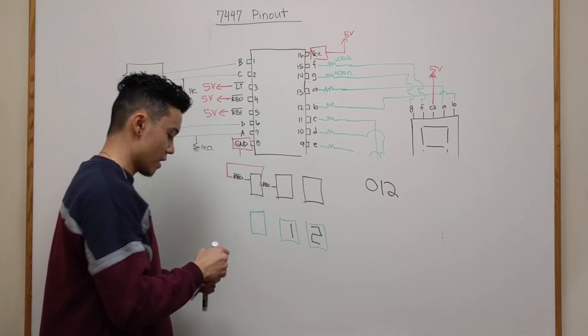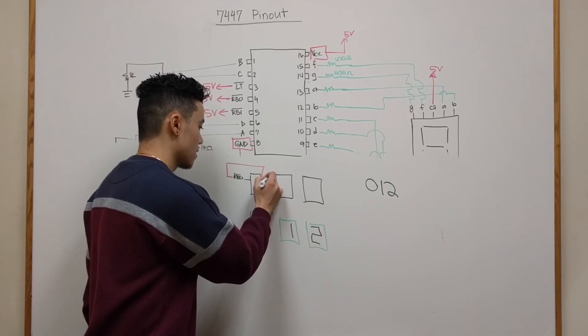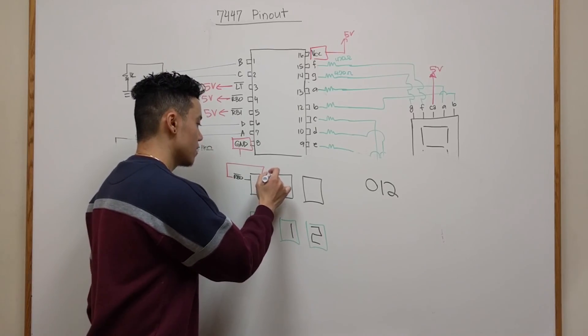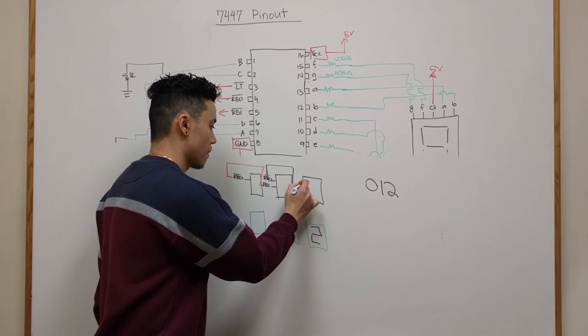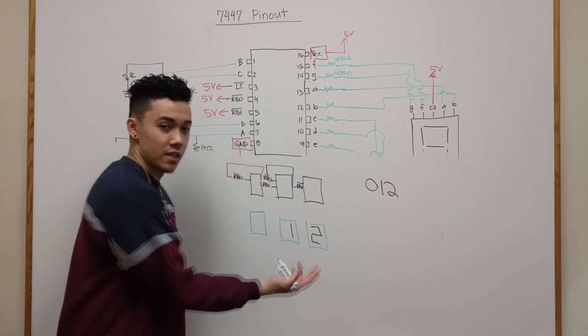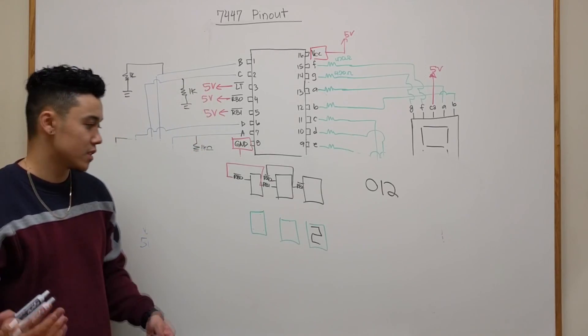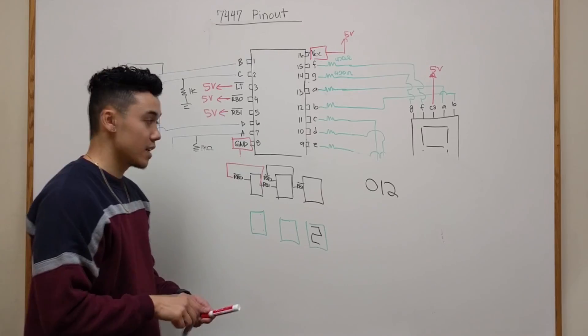And again same thing here. If you connect this RBO to this RBI, if for some reason you just wanted to display the number 2, then both of these would be suppressed and you would just have the number 2 by itself.